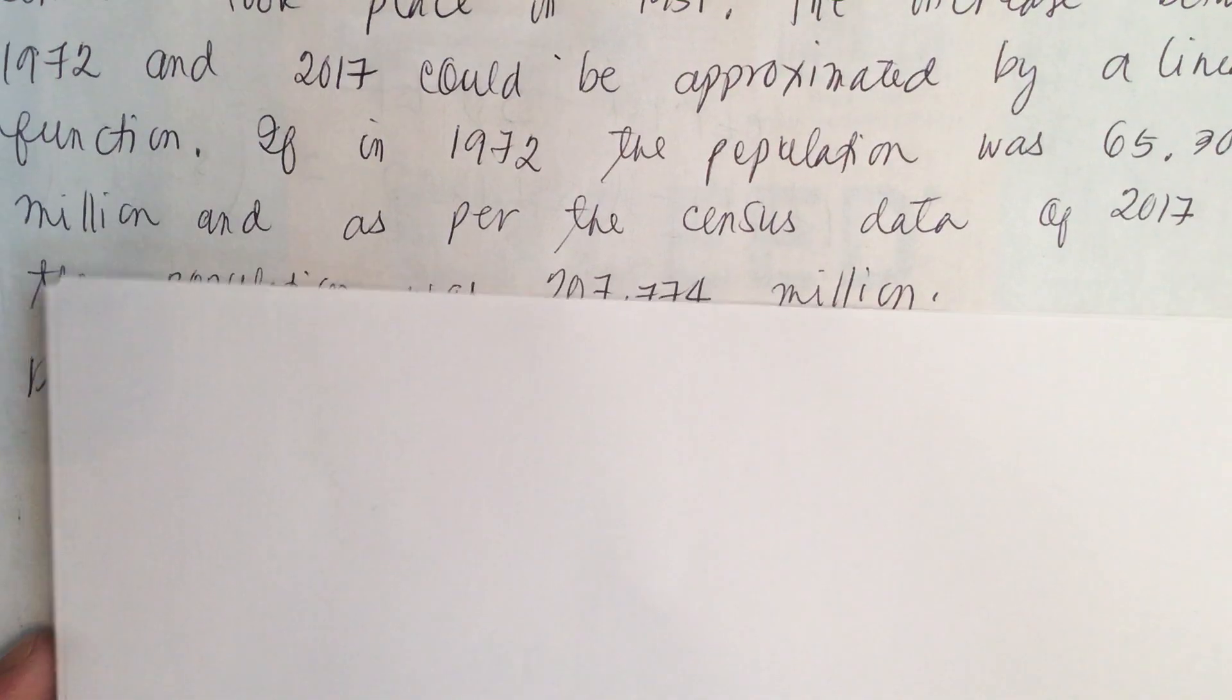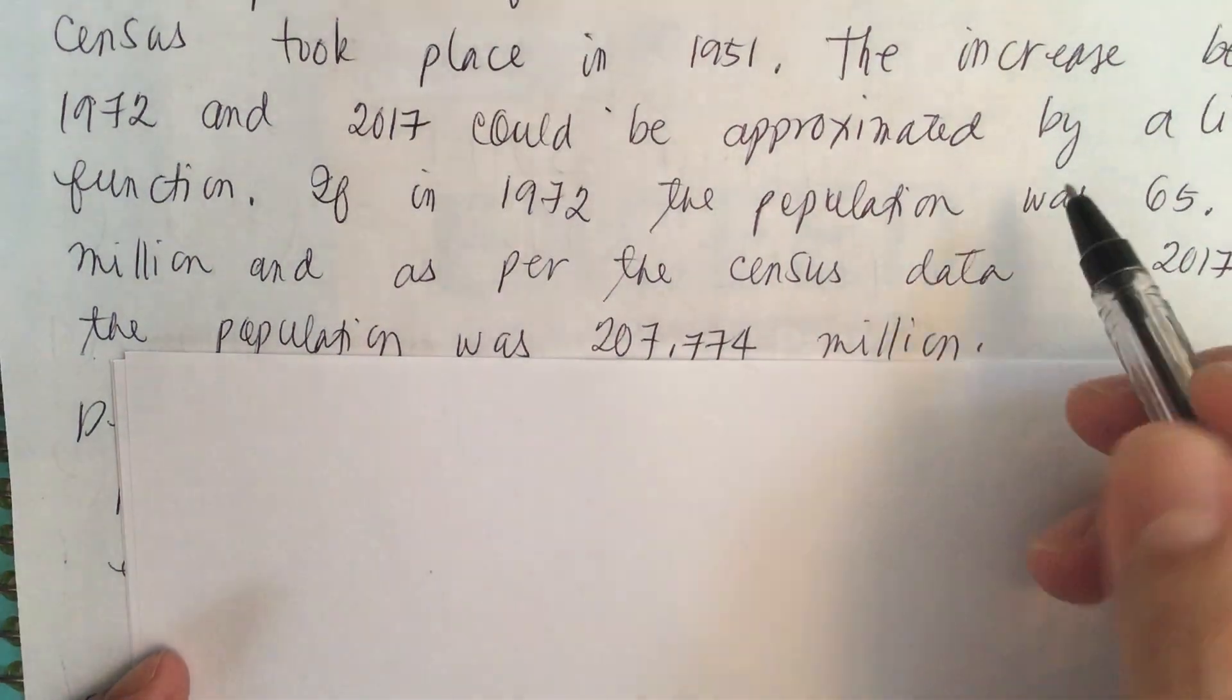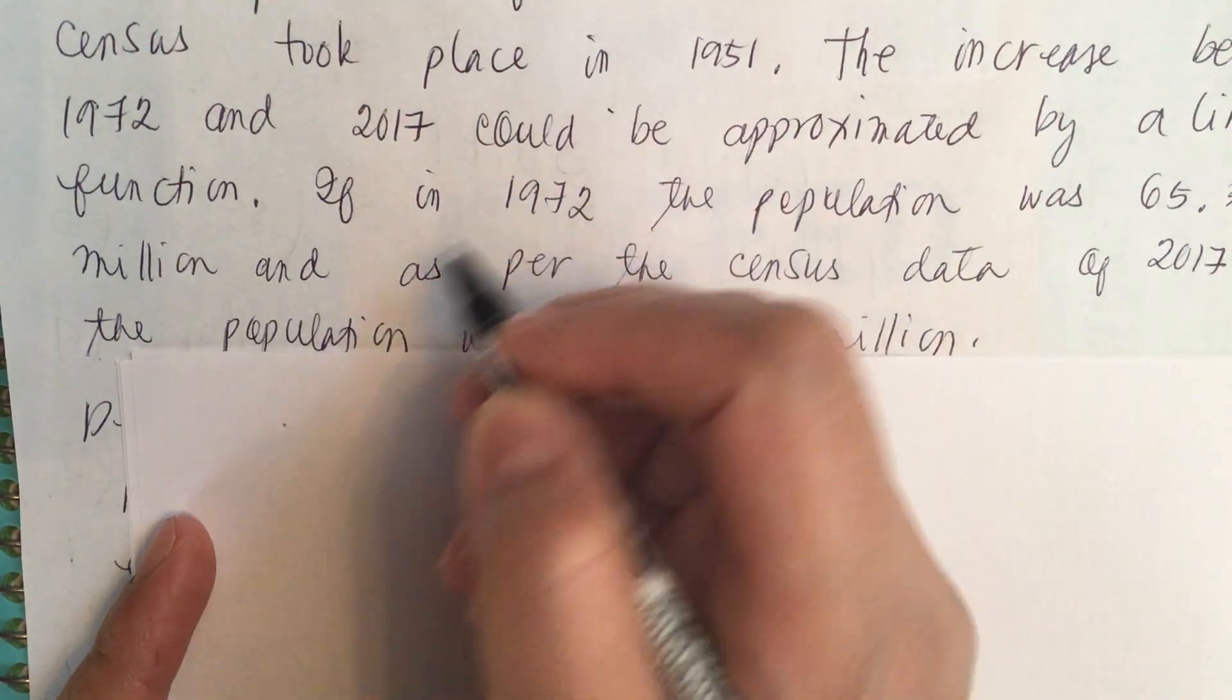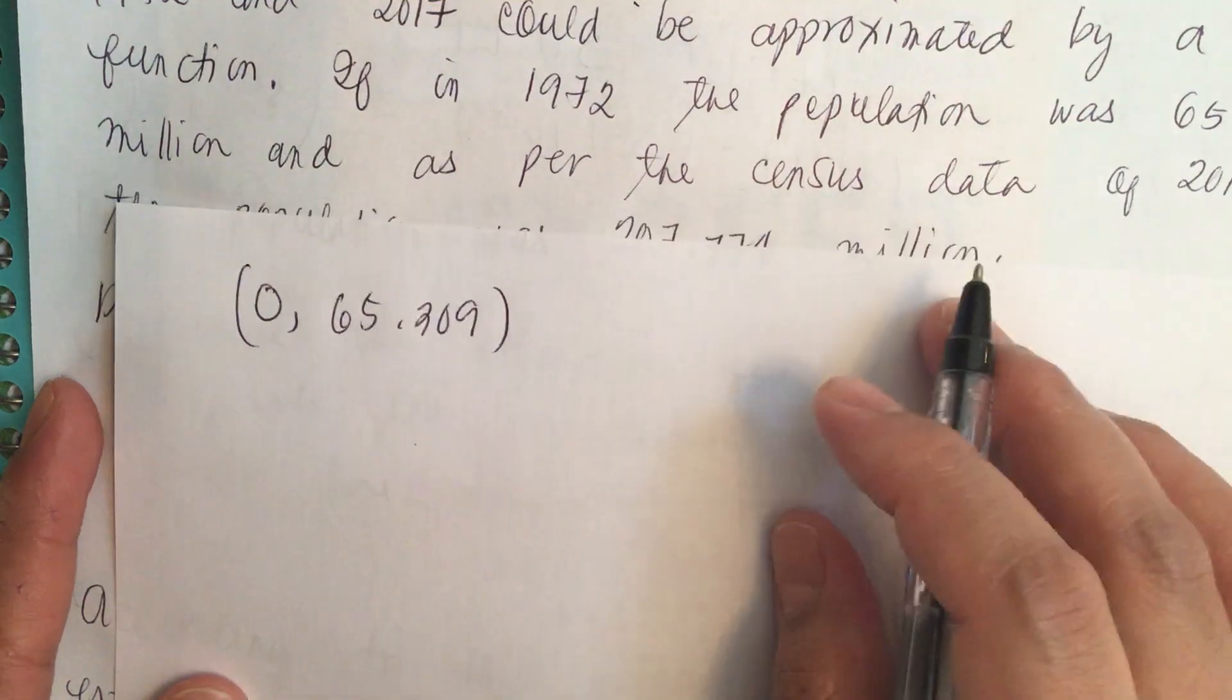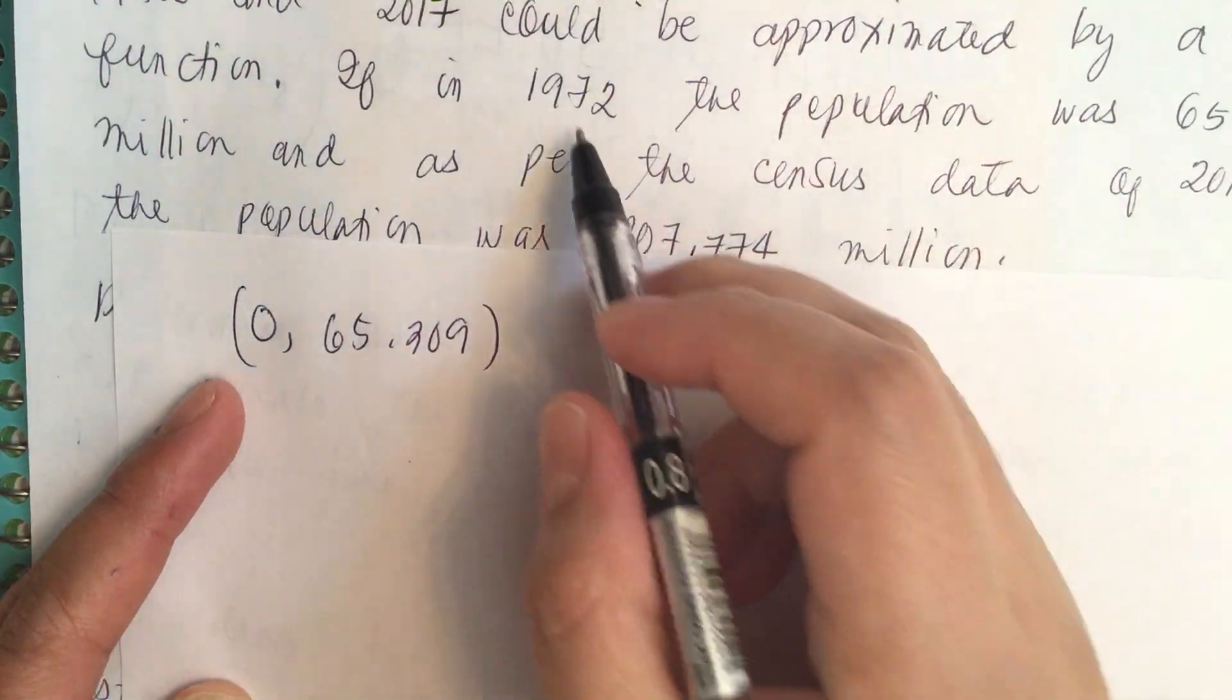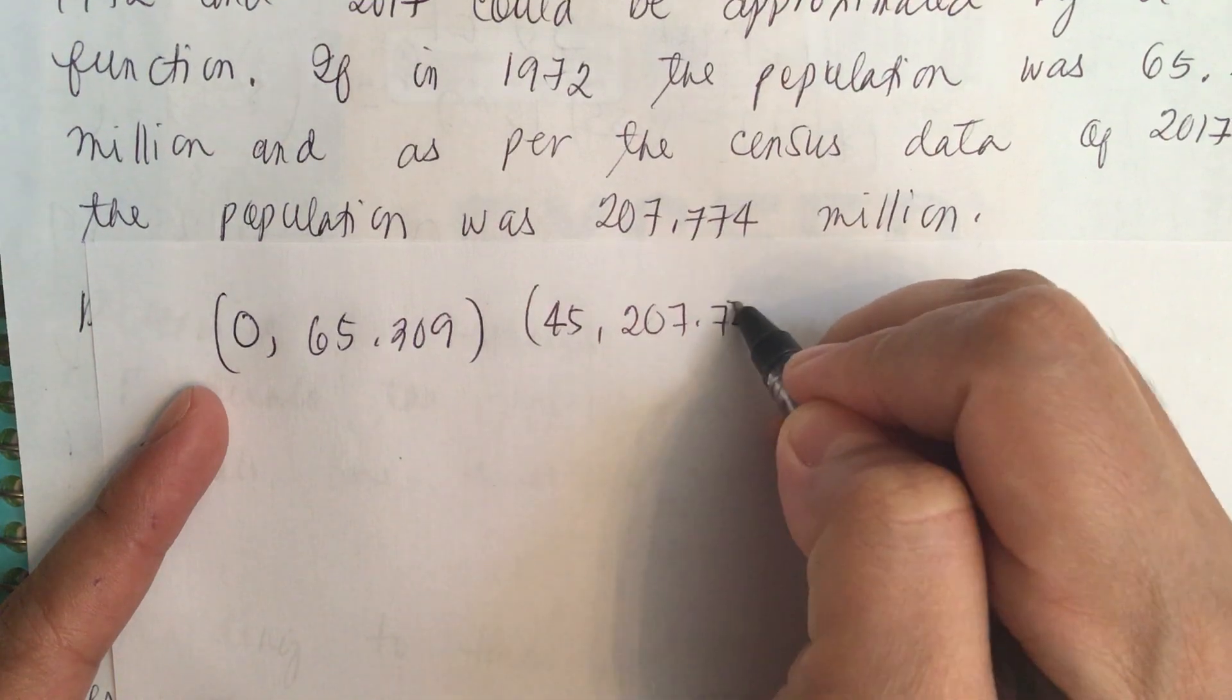They gave us two points. They gave us 65.309 and 1972. This started at 1972, so that's 0, and then we have 65.309. And then the second point, the second data that they gave us is in 2017, that's 45 years after 1972. So that's 45, and then that's 207.774.